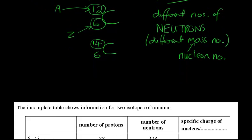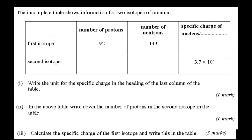OK, moving on, let's take a look at the next one. So we've got a table now and we've got two isotopes of uranium. The first isotope has got 92 protons, it's got 143 neutrons in there. So if we were to add those two together, then we would get the mass number. Yes, you're right, the nucleon number. OK, we've got something called the specific charge of the nucleus.